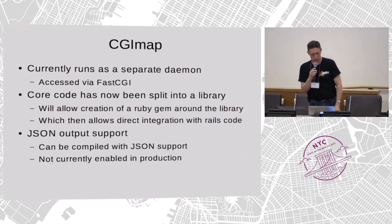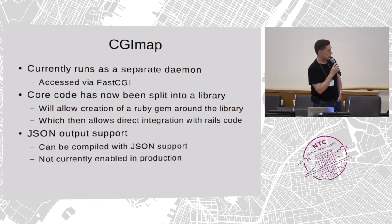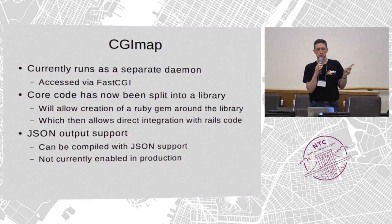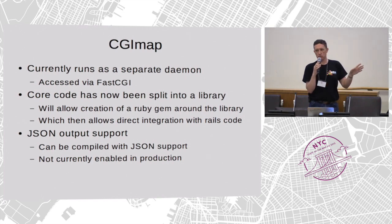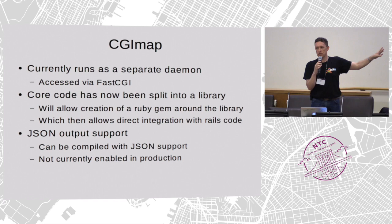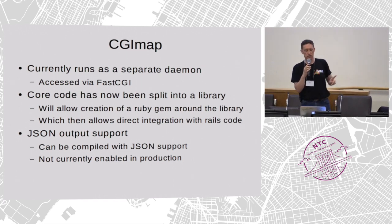The other thing being worked on is that CGI map actually supports JSON output. Currently the API is entirely XML. CGI map supports JSON output for the calls it knows how to handle, but that's not currently enabled on the production site because we don't want to do that until we have reasonably complete coverage of the API in JSON. The goal is to get the whole API in CGI map, get Rails using that, and then we can turn on JSON. So if you want something to work on, this is a really good place. Matt will love to hear from you — he's not here, but I can put you in touch with him.